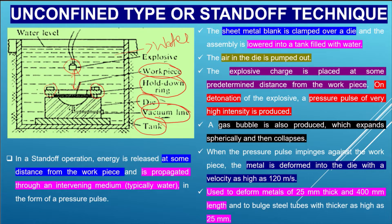In the standoff technique, the sheet metal blank is clamped over a die and lowered into a tank filled with water. The vacuum pump evacuates the die cavity. Then the explosive charge is placed at some predetermined distance from the work piece. On detonation, a pressure pulse of very high intensity is created.